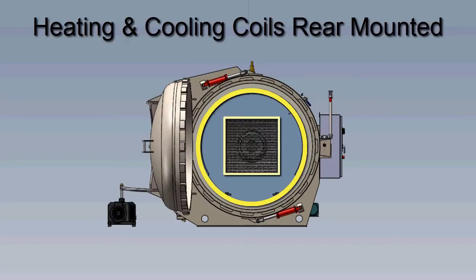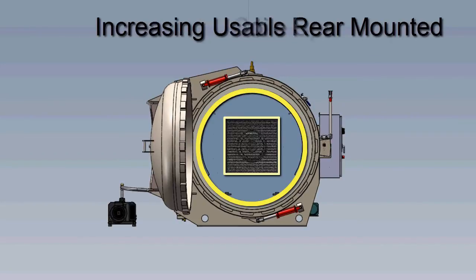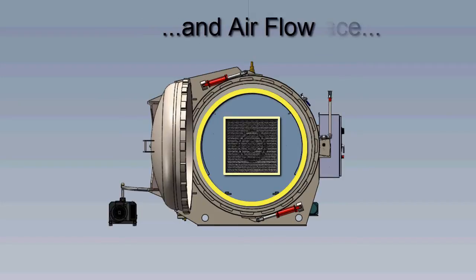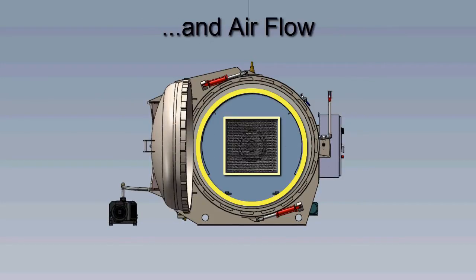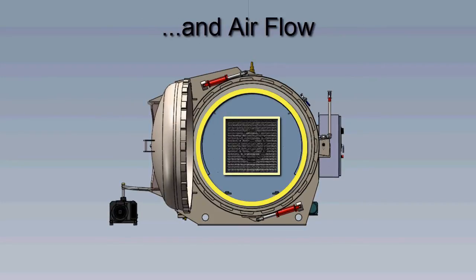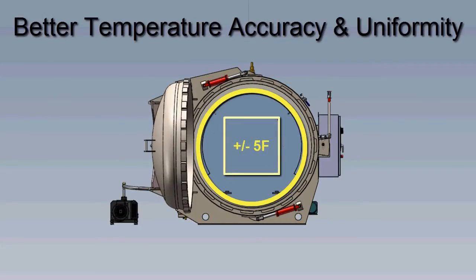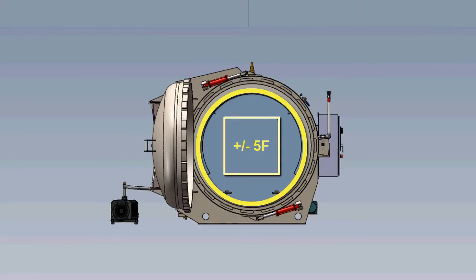Having these components in the rear of the chamber rather than the floor increases the amount of usable space within the autoclave and the airflow from the back flowing through the ductwork around the door and back through the center, helping provide temperature control accuracy and uniformity of plus or minus 5 degrees Fahrenheit.